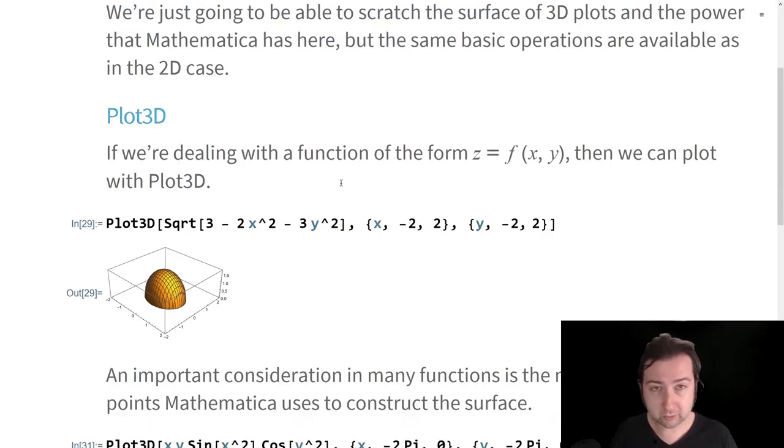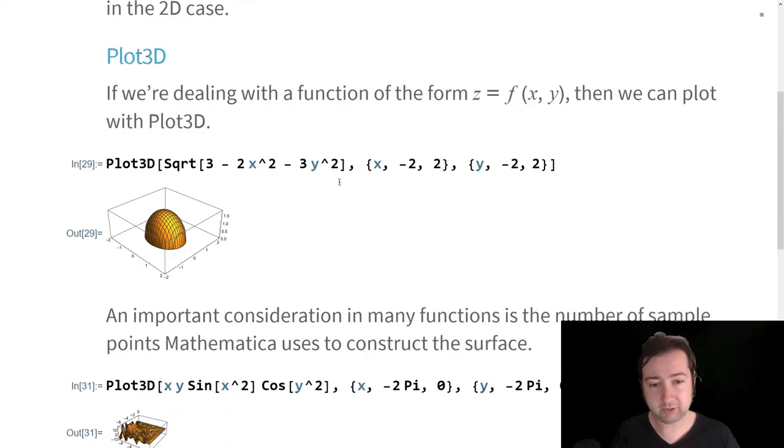We're just going to scratch the surface of the different options that we have available for 3d plots. The basic workhorse of plotting in three dimensions is plot 3d, which is just the corresponding function to plot in two dimensions. This is going to presume that we have a function z, which is a function of x and y. The height of the surface is going to be dictated by some position in the xy plane. And when you have that, it just works exactly like it does in two dimensions. But now we have to add another dimension here.